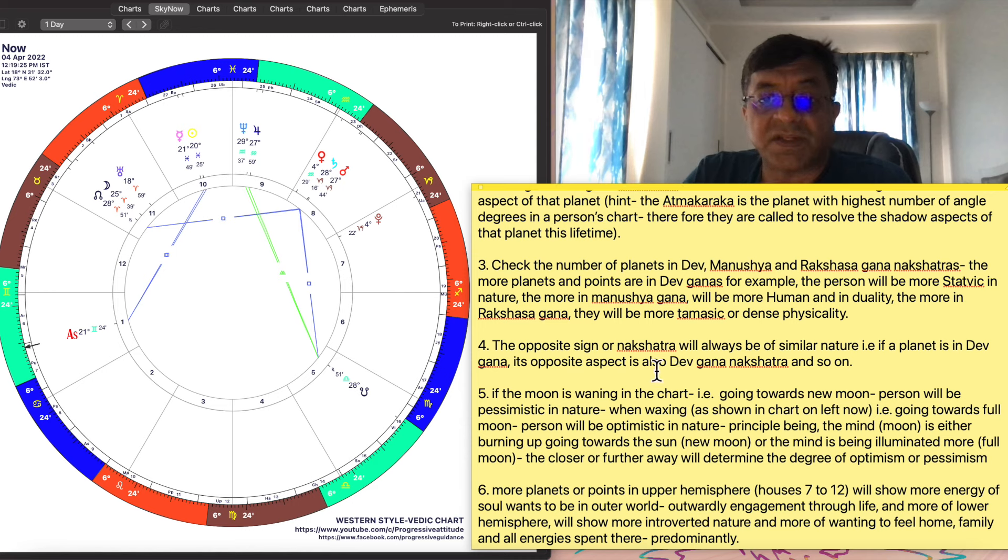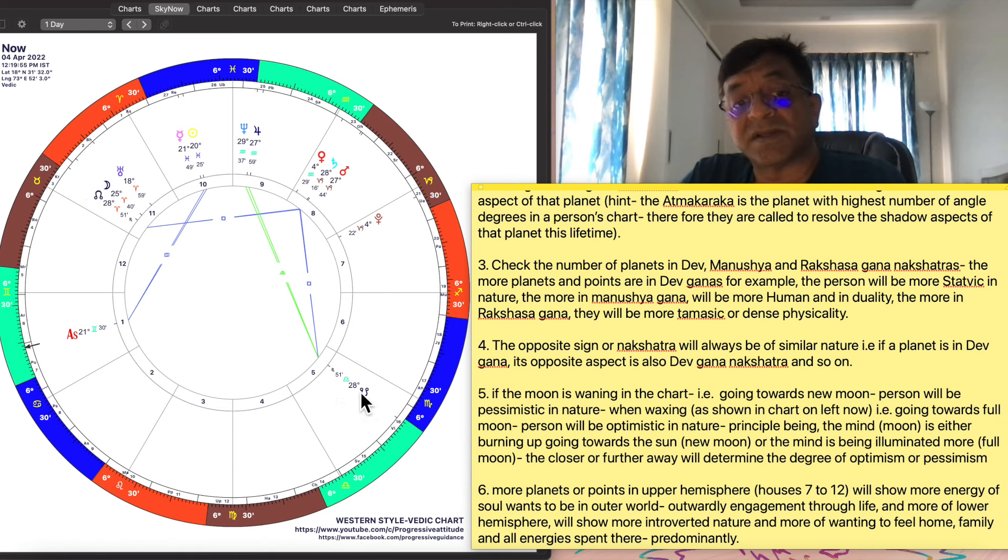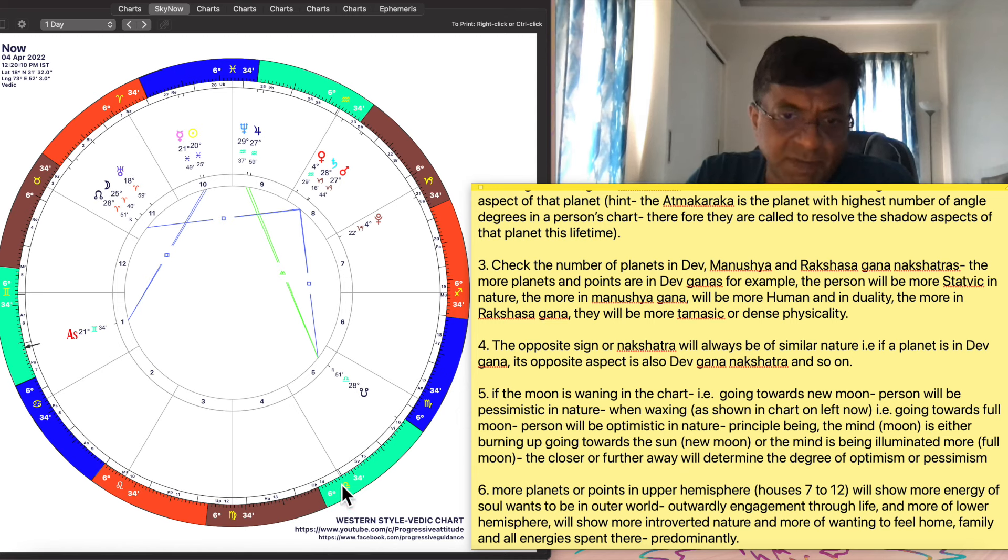The fourth point is the opposite sign or nakshatra will always be of similar nature. Let's take Rahu and Ketu here. This is Ketu over there, this is Rahu. Sorry, this is Rahu over here, Ketu over here, the south node of the moon. Now they will always be 180 degrees apart as you know if you are an astrologer. The Rahu right now in Krittika and Ketu is in Vishaka. As you can see this is Vishaka nakshatra. So the opposite nakshatras will always have the same type of Gana or the group. Either this will be Dev, so this will be Dev. This will be Rakshasa, so this is also Rakshasa gana and so on. If this is the Revati then the opposite sign will be Swati like that. So it's all opposite signs are of the same type of group. Important to remember that because the planets always look at the seventh aspect as the opposite sign.